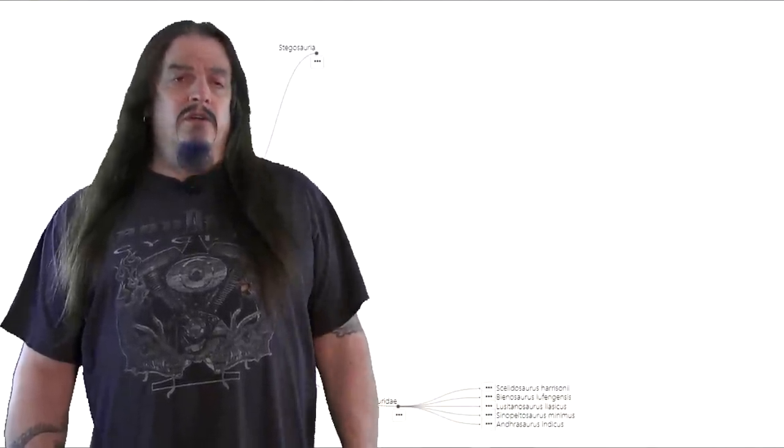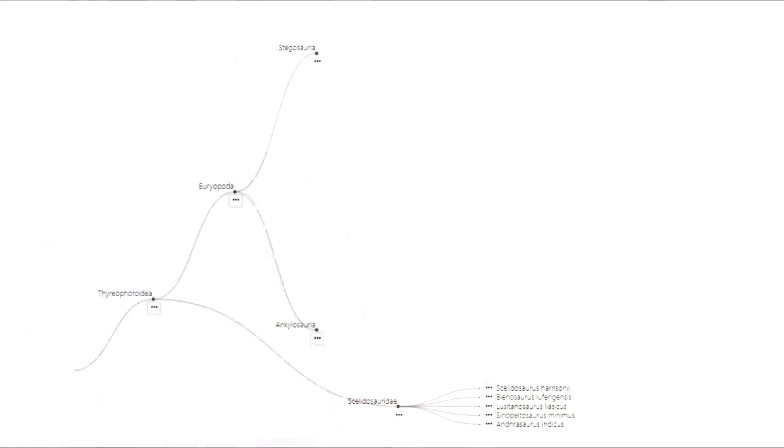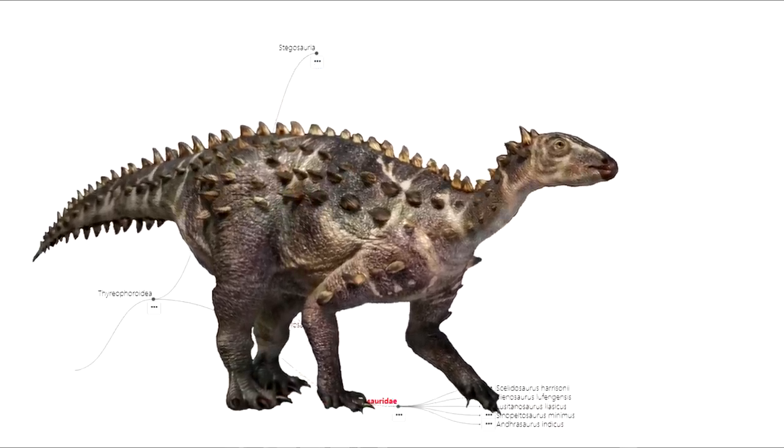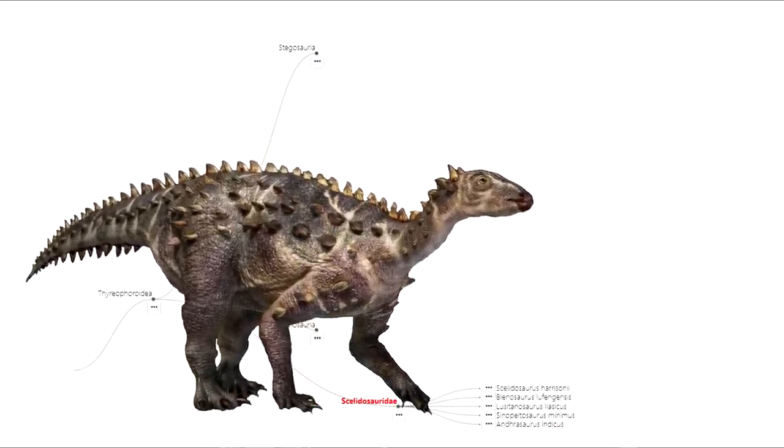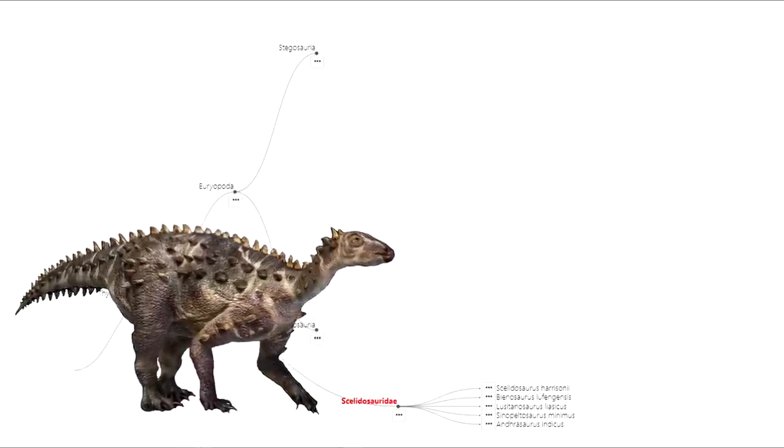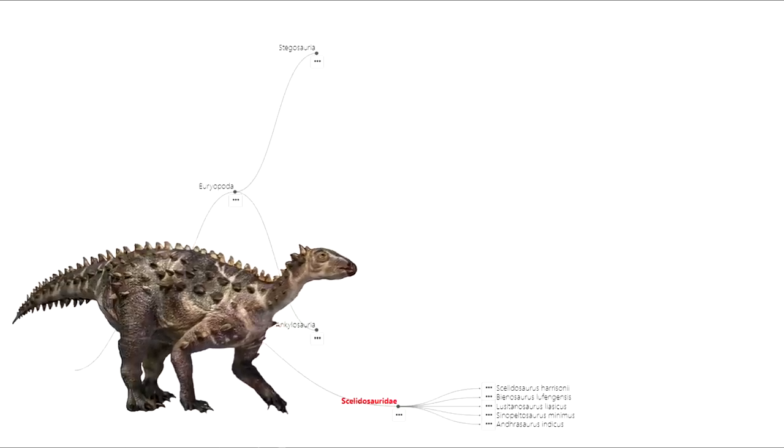As for herbivores, not all of them were as big as Iguanodon. For example, there was at that time a group of Scalatosaurs that were big by today's standards, being bigger than cattle, but they weren't very big by dinosaur standards. So how did these seemingly helpless plant eaters protect themselves from Megalosaurs and other large predators of that time?